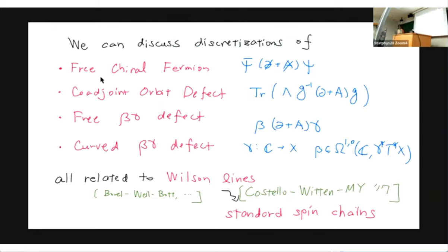After discretization, you can discretize various different objects: the free chiral fermion, the beta-gamma defect (a bosonic version of the fermion), the coadjoint orbit defect where G is the group element, and so on. It turns out that in most cases, after discretization, all of them are described by so-called Wilson lines — another object in the four-dimensional Chern-Simons theory — because they generate a Hilbert space with the action of the gauge group G, and there is a general mathematical theorem that translates these to Wilson lines.